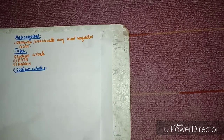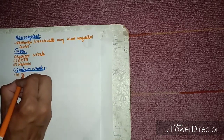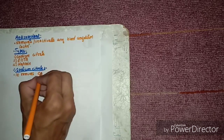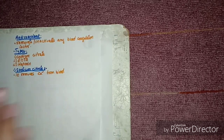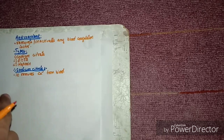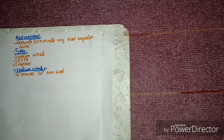First we will discuss sodium citrate. Its mechanism of action is that it removes calcium ions from the blood — it chelates calcium and does not allow any coagulation factor to coagulate the blood, because calcium is necessary for coagulation. So it removes calcium from the blood, and that is why it is used as an anticoagulant.